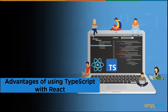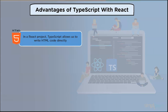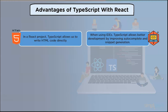In a React project, TypeScript allows us to write HTML code directly. TypeScript delivers superior IntelliSense and code completion for JSX — JavaScript XML — when used with React. When using IDEs like Visual Studio, Visual Studio Code, Atom, WebStorm, Eclipse, and others, TypeScript comes in handy. This allows better development by improving autocomplete and snippet generation.